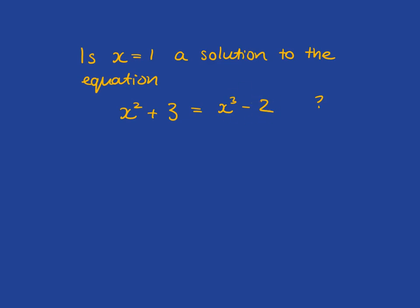When x equals 1, the left-hand side of the equation is going to be 1 squared plus 3, which is 1 plus 3, which is 4.